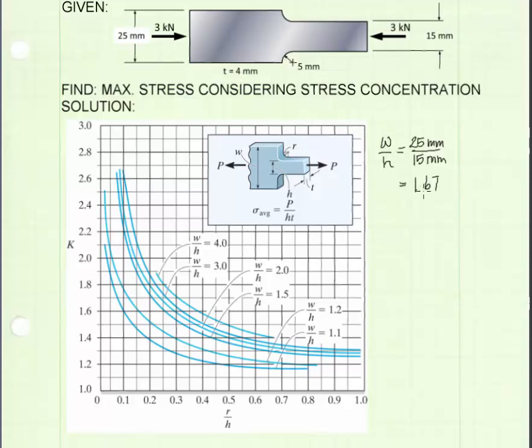Our W over H ratio is then 1.67. The other ratio we need is the ratio of R over H, here at the bottom of the chart. From the figure, we see that R is the radius of the fillet between the larger and smaller sections. For our problem, we see that the radius of the fillet is 5 millimeters. The R over H ratio is equal to 0.33.